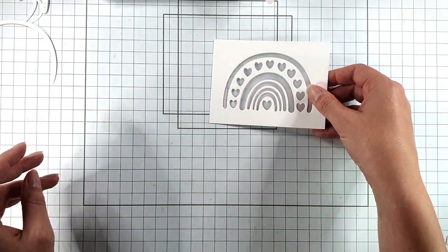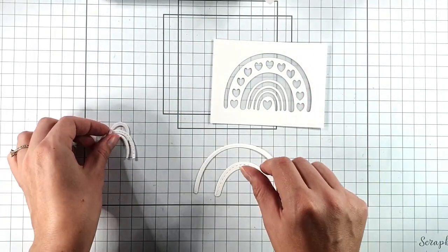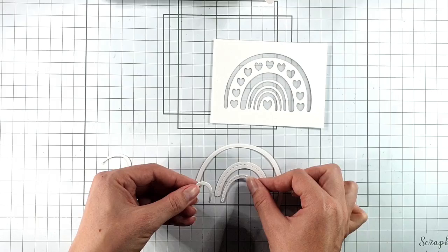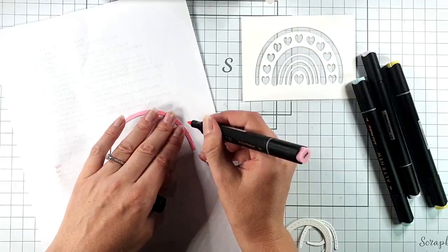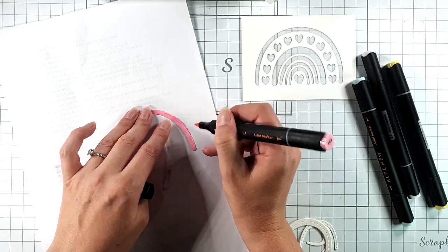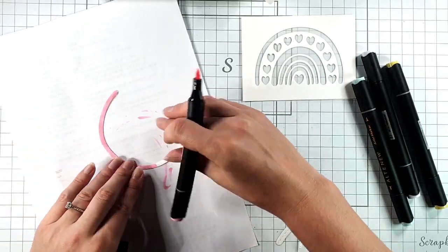So then I want to make my rainbow look pretty. Apart from the hearts, I've got all of the pieces that I cut out of the rainbow. I'm just going to color them in some pretty pastel colors. I'm just using my Altenew Artist alcohol markers to color those.